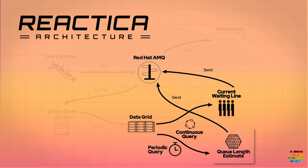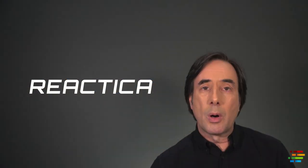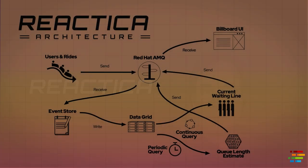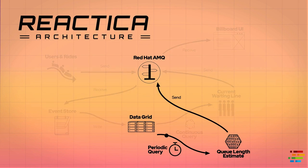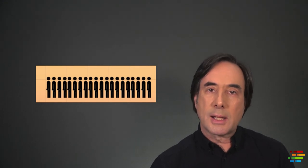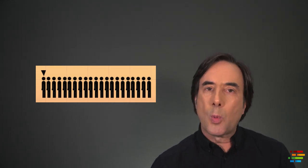The queue length estimate and current waiting line components are consumers of the data in the data grid. They also produce data that is consumed by the billboard UI component. It's important to remember that in a reactive system, a given component can be both a producer and a consumer. The queue length estimator uses a periodic query that runs every 10 seconds. It looks at the number of users in line, how long the ride takes, and the number of users who can ride at the same time. So if there are 20 people in line, the ride takes a minute, and 10 people can ride at once.